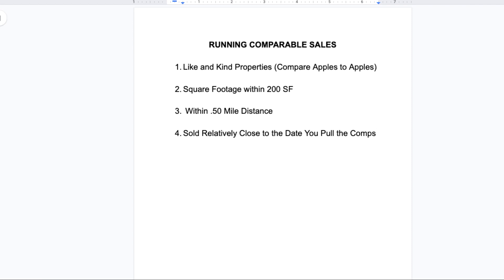Just to recap: we're pulling like and kind properties, comparing apples to apples. We're pulling within a 200 square foot range, within a half mile radius for distance from the property, and looking for properties that sold relatively close to the date you pulled the comps. All of this depends on where you live, the market, and a lot of different factors — but these are the key things you're looking for.